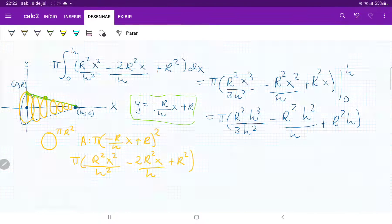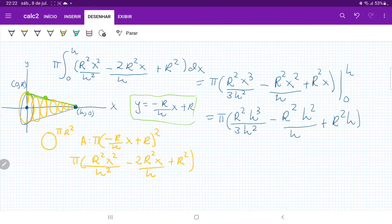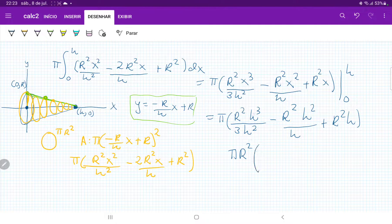And then when we simplify this, we're going to get, I'm going to remove all the r's outside because they are constants. So we're going to get pi r squared, and here,